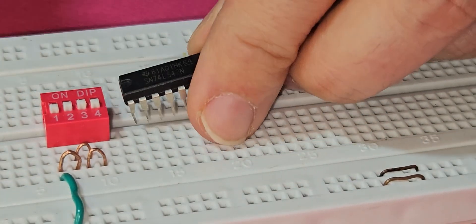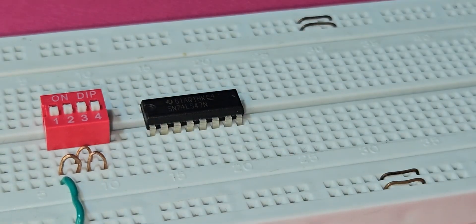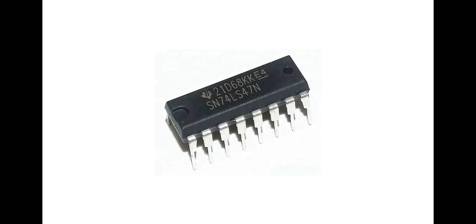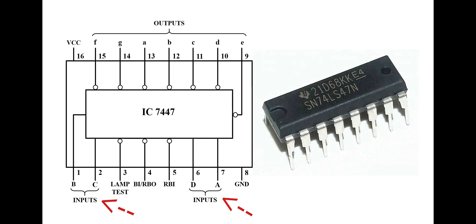The IC 7447 belongs to the 74 series of logic components. This IC has 14 pins. Pins A, B, C, and D are the input pins of the IC, and binary values are applied to them.